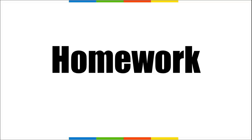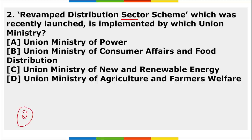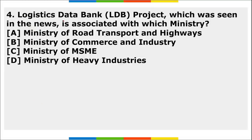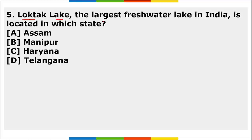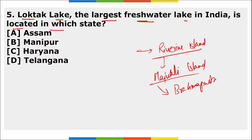Homework questions: First — which state held the most number of sessions of the state assembly in 2021? Second — the Revamped Distribution Sector Scheme recently launched is implemented by which ministry? Third — Penchi Wildlife Sanctuary, where a new damselfly species was found, is in which state? Fourth — the Logistics Data Bank Project seen in the news is associated with which ministry? Fifth — Loktak Lake, the largest freshwater lake in India, is located in which state? Also, where is Majuli Island located, and which river surrounds it? The answer is the Brahmaputra River.